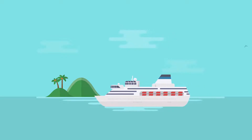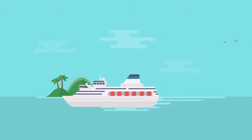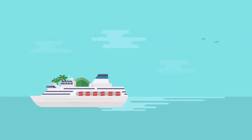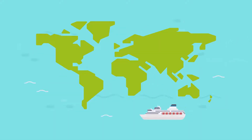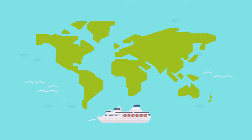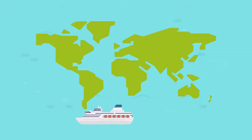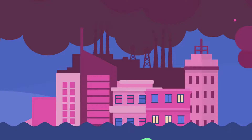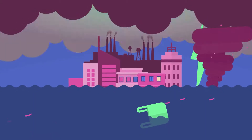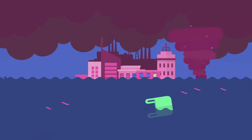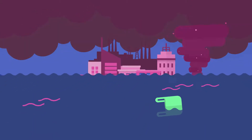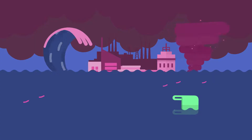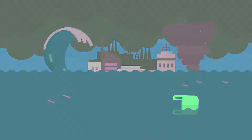The world's oceans — their temperature, chemistry, currents and life — drive global systems that make the earth habitable for humankind. How we manage this vital resource is essential for humanity as a whole, and to counterbalance the effects of climate change.